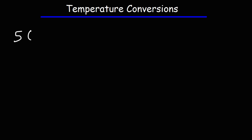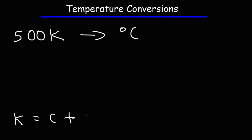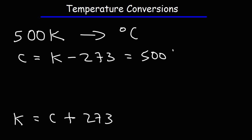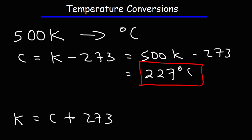Now let's say we have a temperature of 500 Kelvin and we wish to convert that to Celsius. Since the Kelvin temperature equals the Celsius plus 273, the Celsius temperature is the Kelvin temperature minus 273. So it's 500 minus 273, which is 227 degrees Celsius. Simply subtract 273 from the Kelvin temperature to get the Celsius temperature.